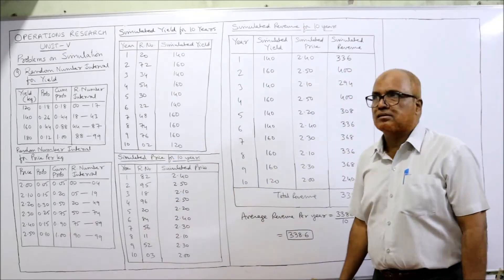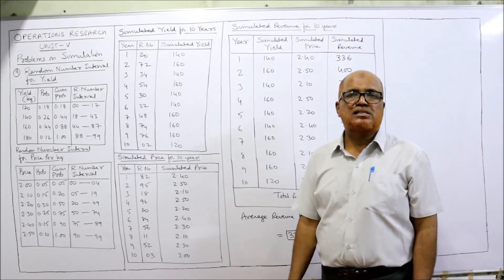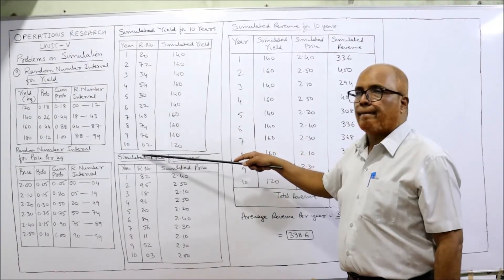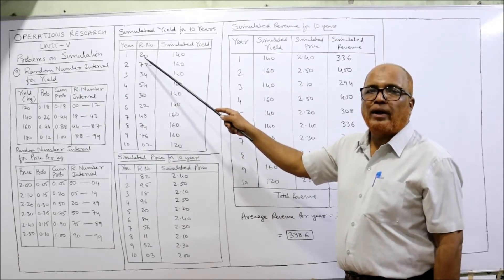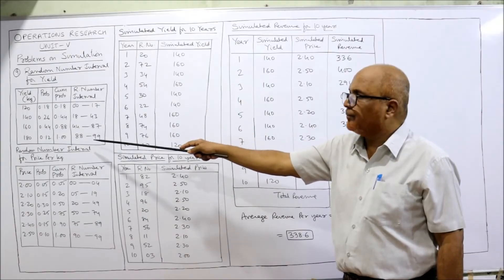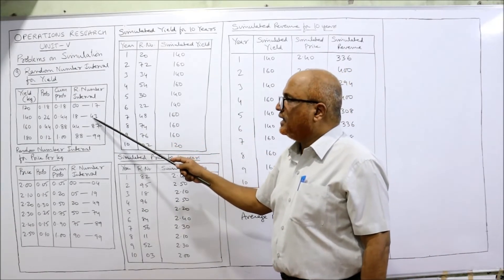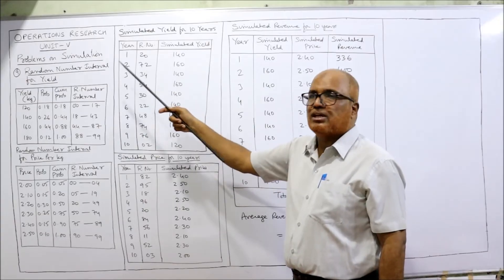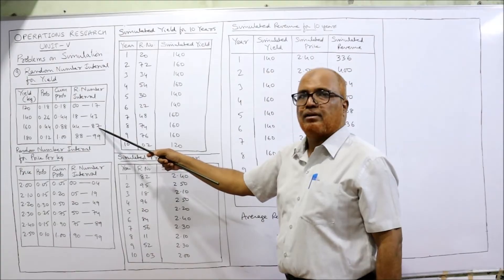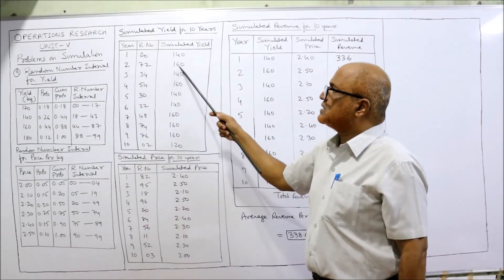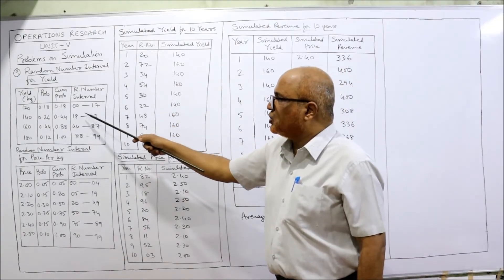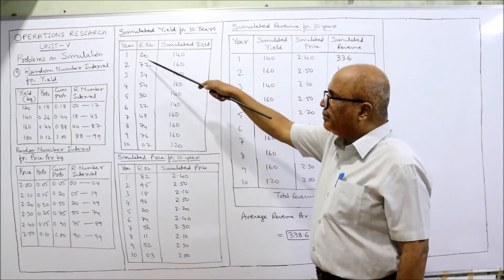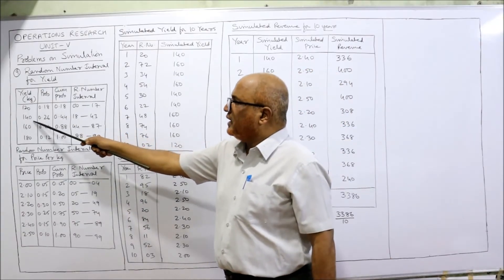Now we simulate the yield for the next 10 years. For years 1 through 10, random numbers for yield are given in the problem. For example, random number 20 falls in the interval 18–43, so the simulated yield is 140 kg/acre. Random number 72 falls in 44–87, so the yield is 160. Random number 34 falls in 18–43, so the yield is 140. Locate each random number in its interval to get the corresponding simulated yield.